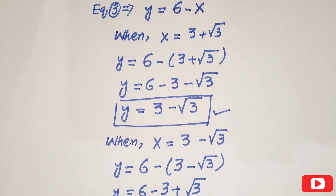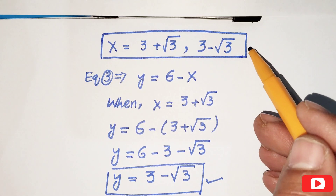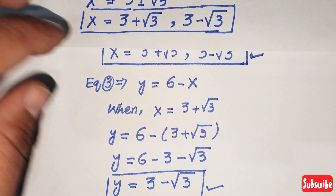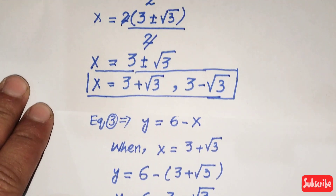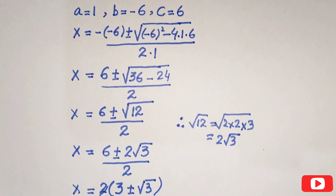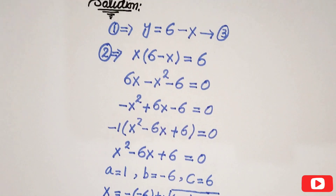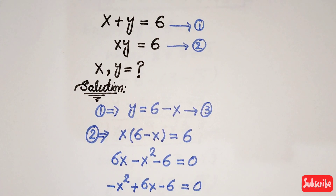So we have two values of x: 3 plus root 3 and 3 minus root 3, with corresponding y values. That's it for today — see you in the next video, thanks for watching, goodbye.